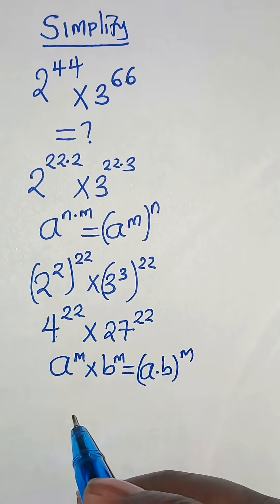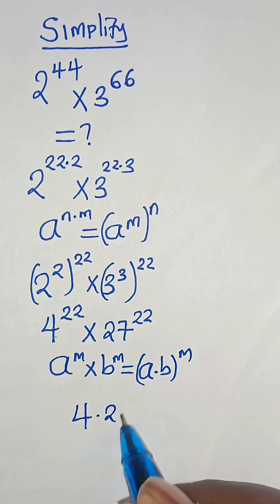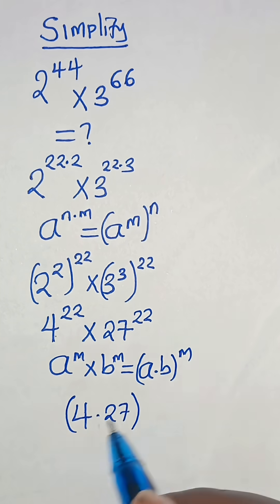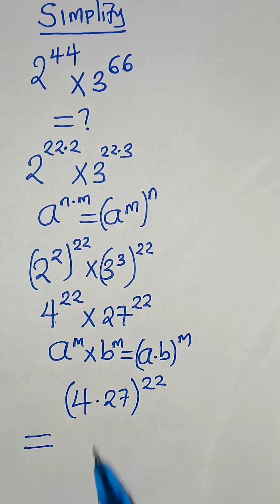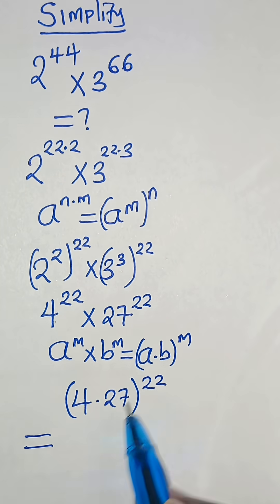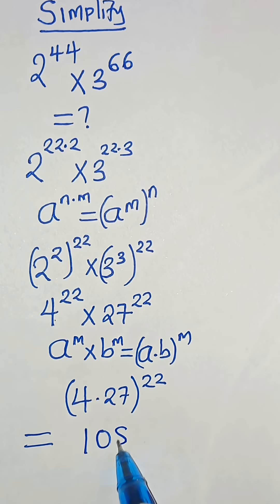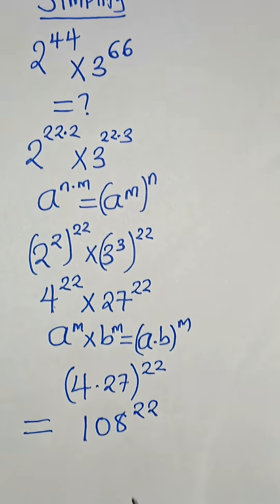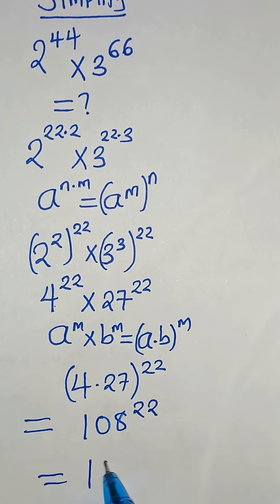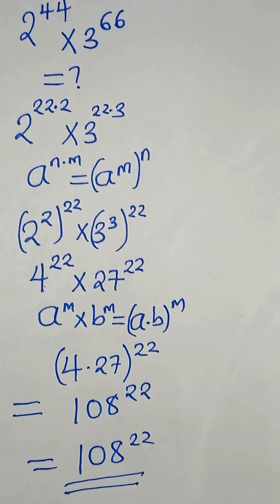So, this implies that we have 4 times 27 raised to the power of 22, and this means that 4 times 27 is equal to 108, raised to the power of 22. And this is the solution to this math problem. Thank you for watching.